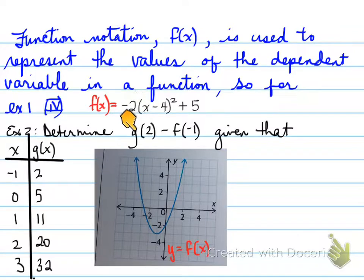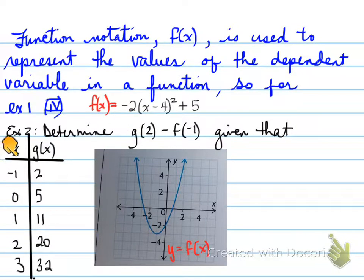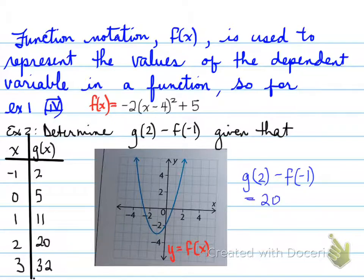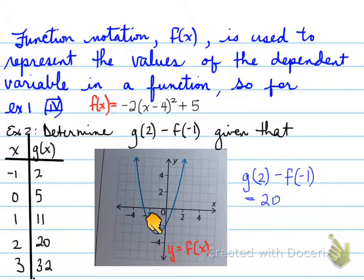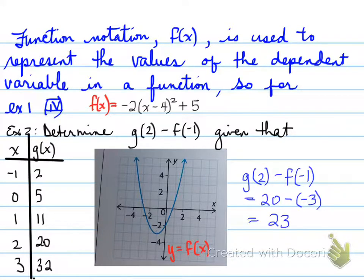Example 2: determine g(2) minus f(negative 1), given g as a table and f as a graph. g(2) means when x is 2, what is the g value? Going to the table, g(2) equals 20. Now f(negative 1): find negative 1 on the x-axis of the graph — the y value there is 3. So the expression becomes 20 minus negative 3, which equals 23. That's the end of 1.1.